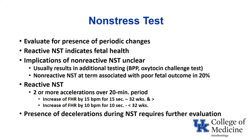Depending on gestational age, the criteria differ. At 32 weeks and above with a more mature autonomic nervous system, you want to see increases of at least 15 beats per minute lasting at least 15 seconds — two of those. With more premature babies, you're looking for an increase of 10 beats per minute for at least 10 seconds. Also, if decelerations occur during the non-stress test even with some accelerations, you'll probably go on to do a biophysical profile to further assess whether the baby is doing okay.